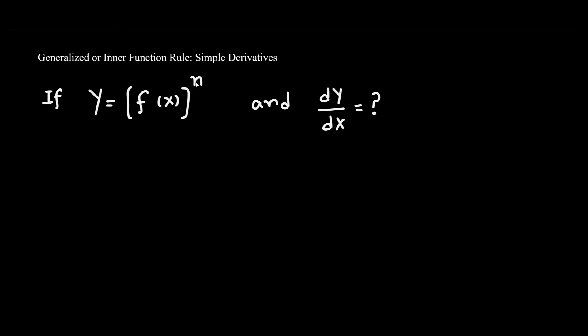To take the derivative of such functions, we apply the generalized power rule or inner function rule. The derivative can be taken by applying the power rule on the whole function, which equals n times f(x) to the power n minus 1, multiplied by the derivative of the function inside the brackets.